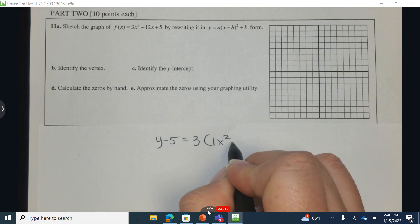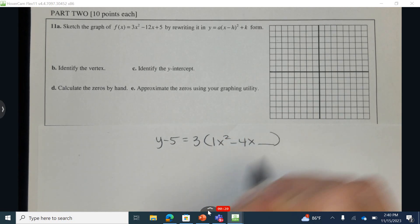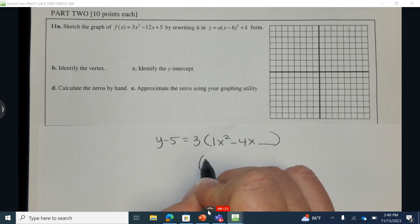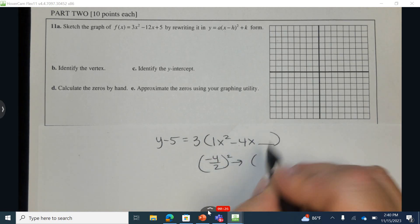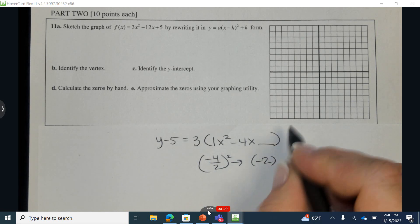3 times 1 is 3. 3 times negative 4 is negative 12. Taking the b, dividing it by 2 and squaring it, make sure to keep the sign with a 4, is negative 2 squared.